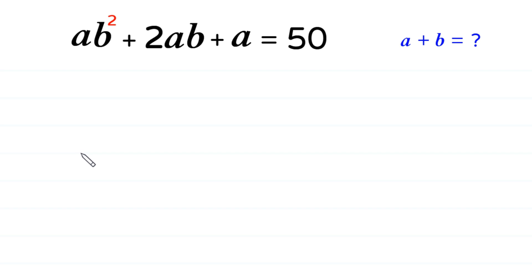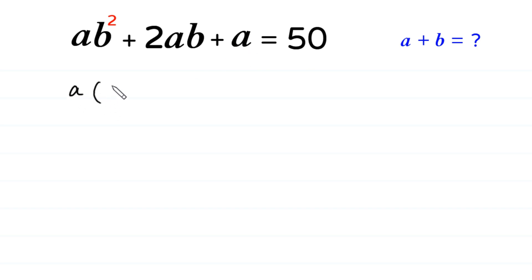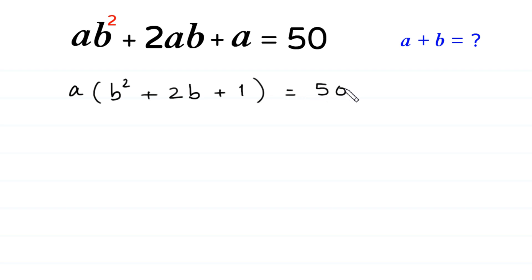Hello, welcome to how to solve this equation for a plus b. The equation is ab² + 2ab + a = 50. From the left side, we can factor out a, giving us a times (b² + 2b + 1) = 50.